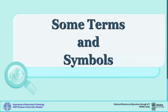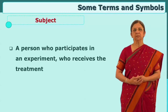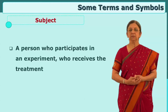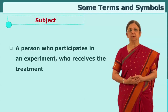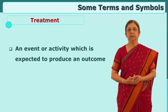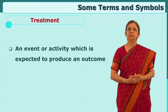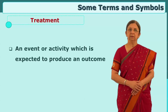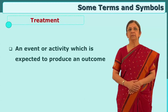Let us see some of the terms related to experimental method. Subjects are persons or individuals who participate in an experiment where we administer a treatment, or we do not administer a treatment but they are still in the group. Treatment is an independent variable which we think would have an effect on some other behaviour — an event or activity expected to have some kind of outcome.